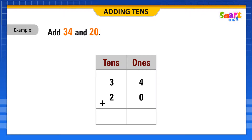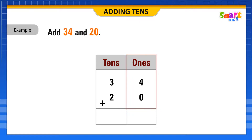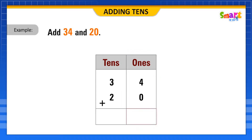Now, look at the digits in the 1s column. Here, we have 4 and 0. As 0 has no value, write 4 as it is in the answer of the 1s place.